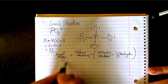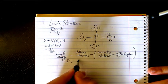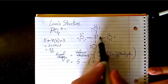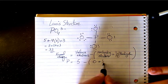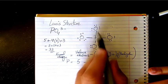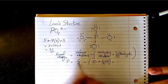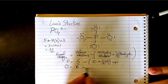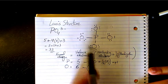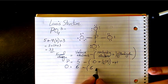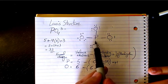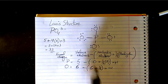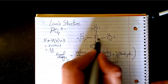For phosphorus: 5 valence electrons minus 0 non-bonding electrons minus half of 8 bonding electrons gives a formal charge of positive 1. For oxygen: 6 valence electrons minus 6 non-bonding electrons minus half of 2 bonding electrons gives a formal charge of negative 1.